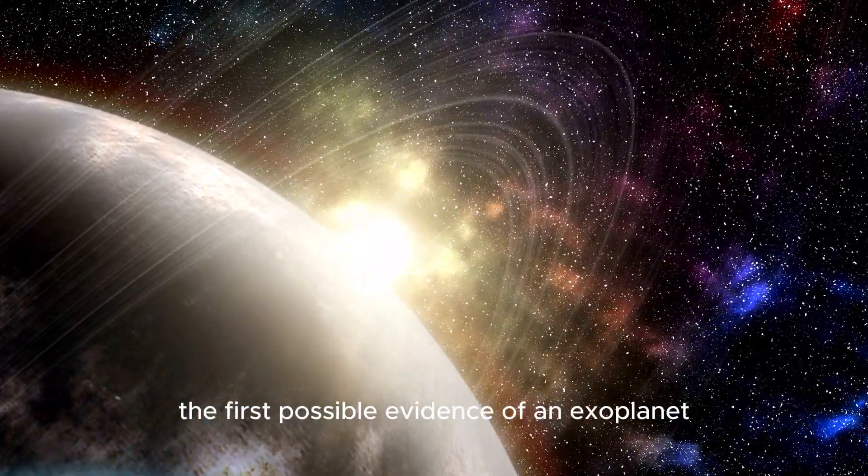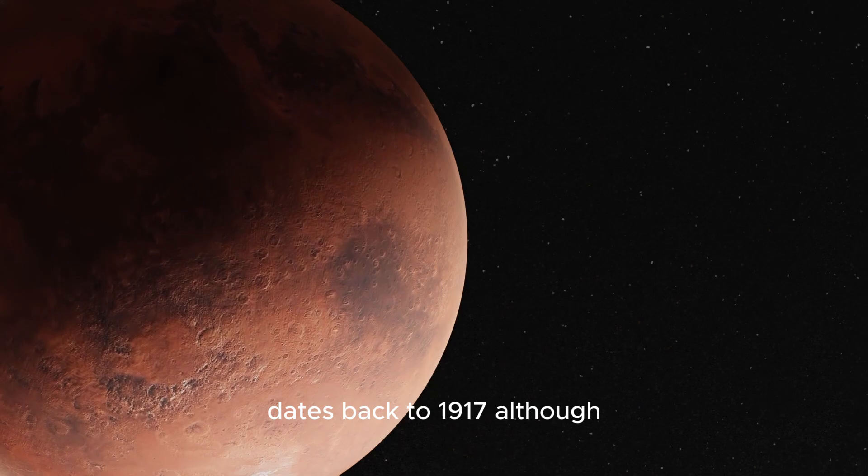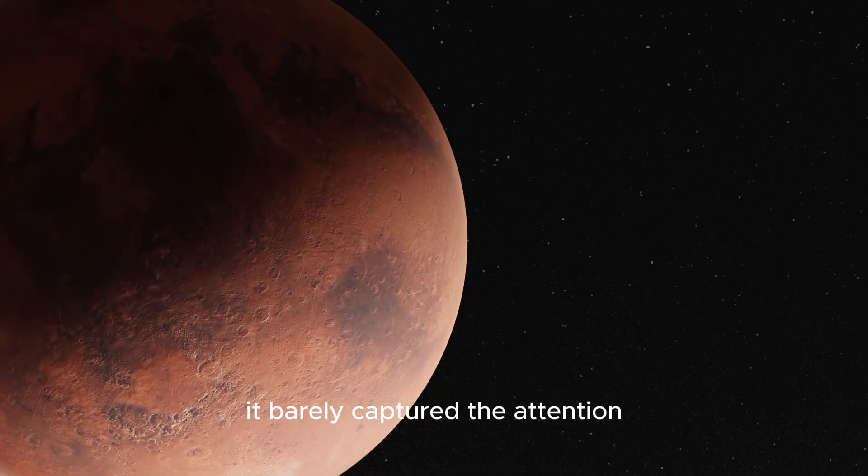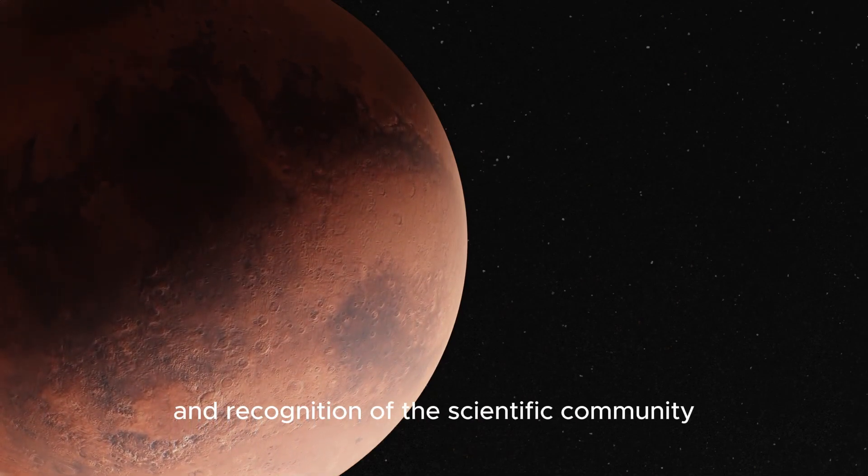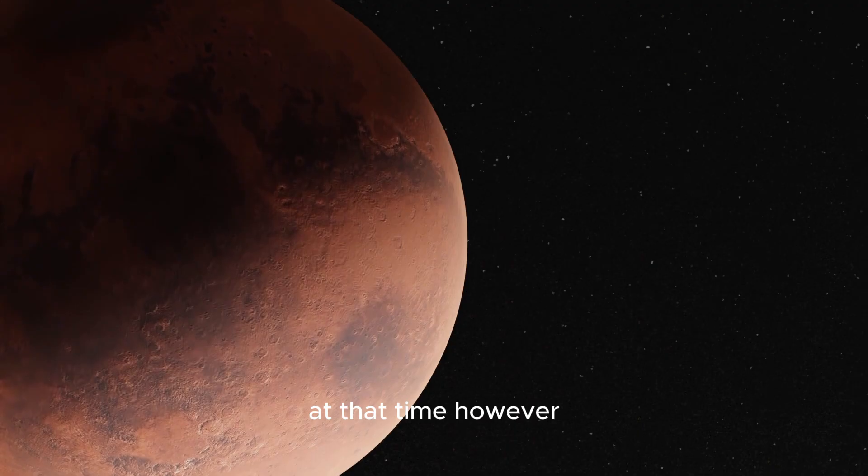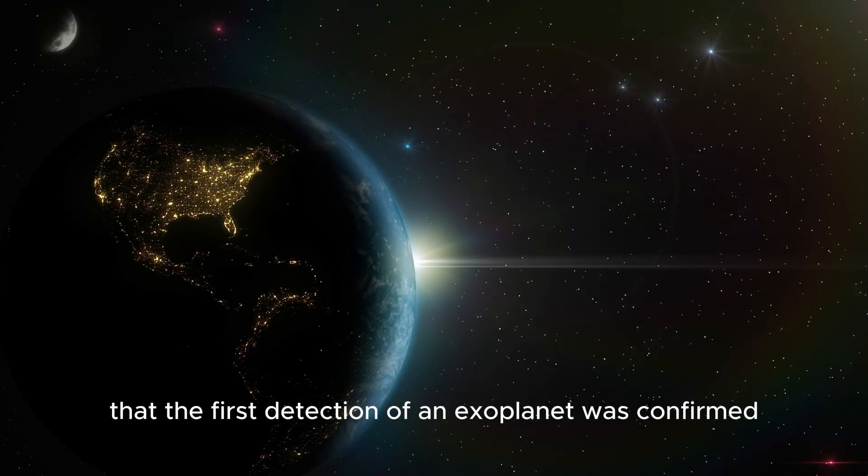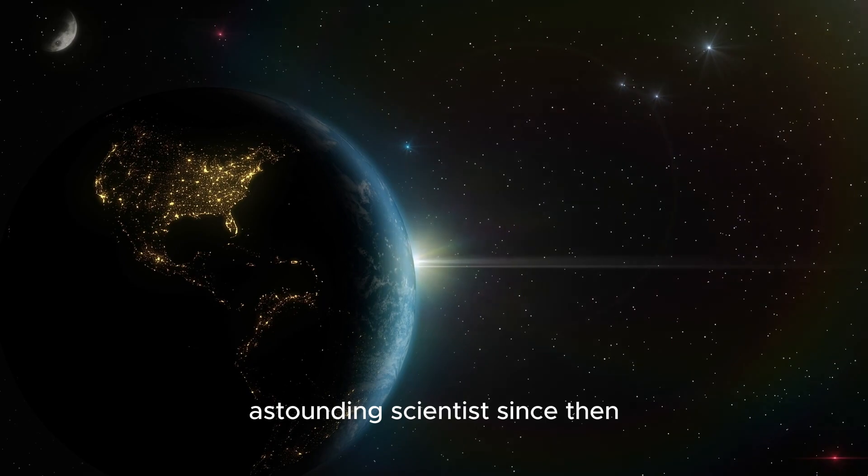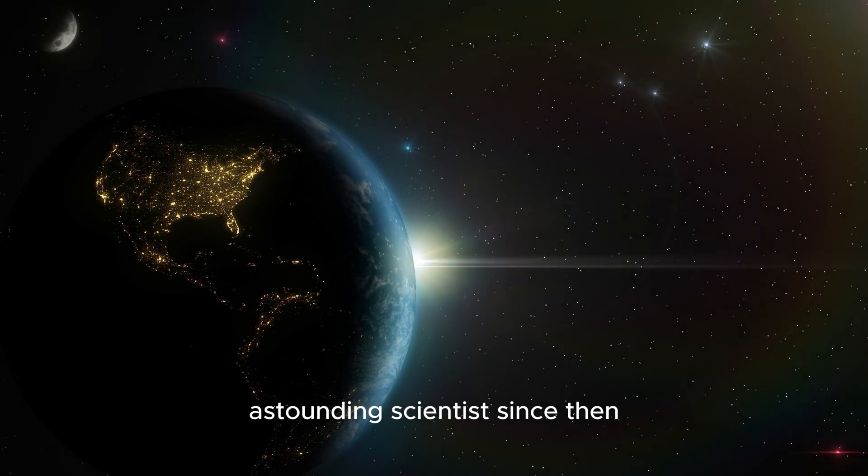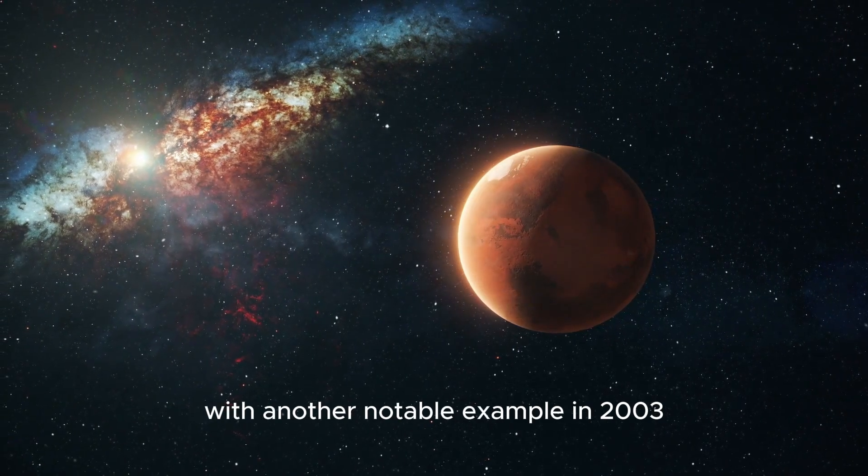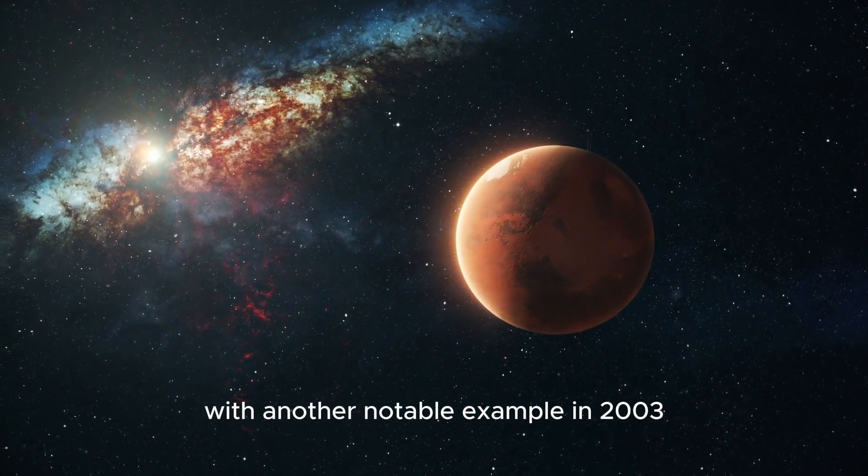The first possible evidence of an exoplanet dates back to 1917, although it barely captured the attention and recognition of the scientific community at that time. However, it was in 1992 that the first detection of an exoplanet was confirmed, astounding scientists. Since then, many other exoplanets have been confirmed, with another notable example in 2003.